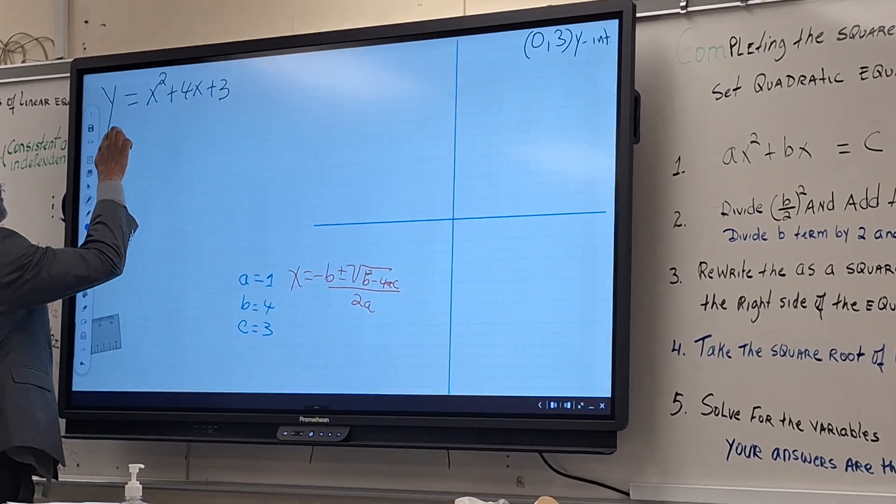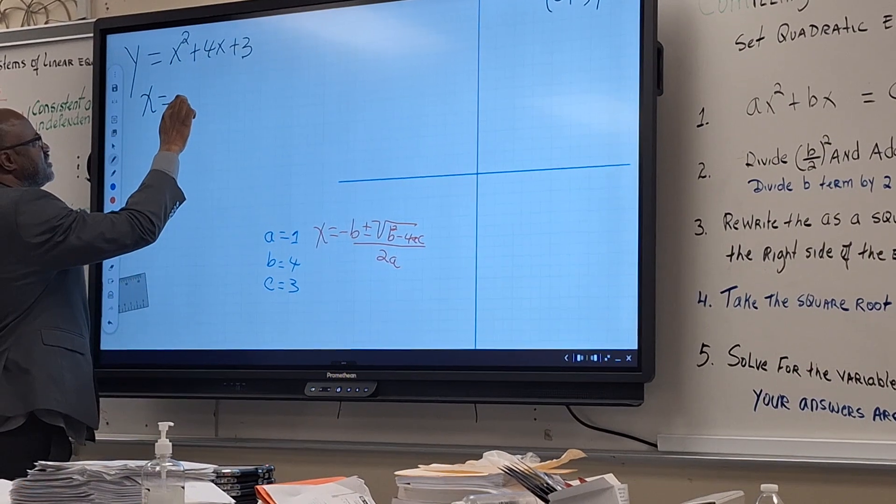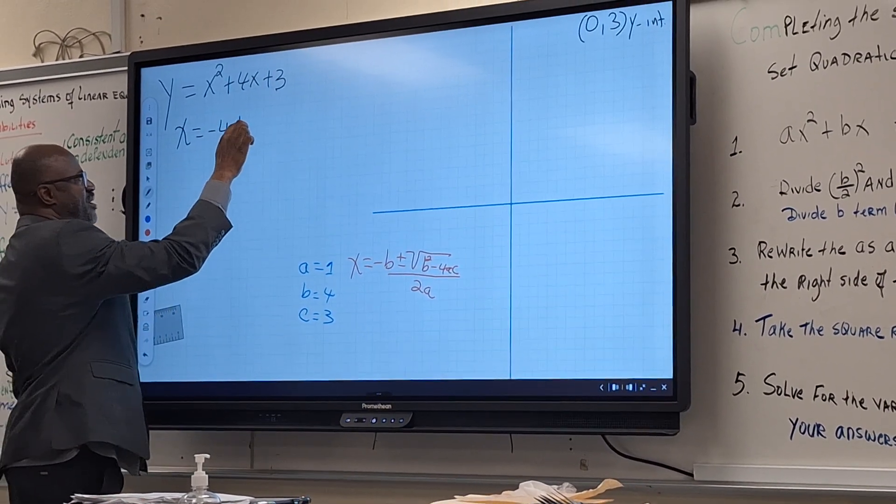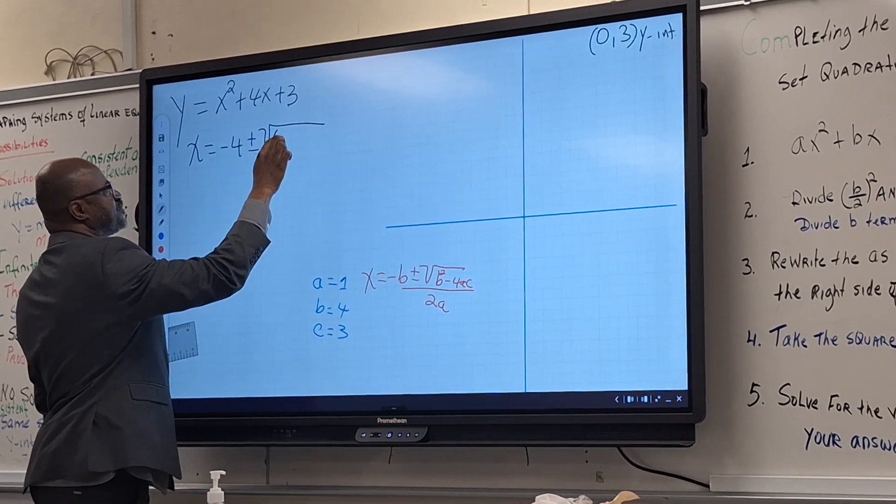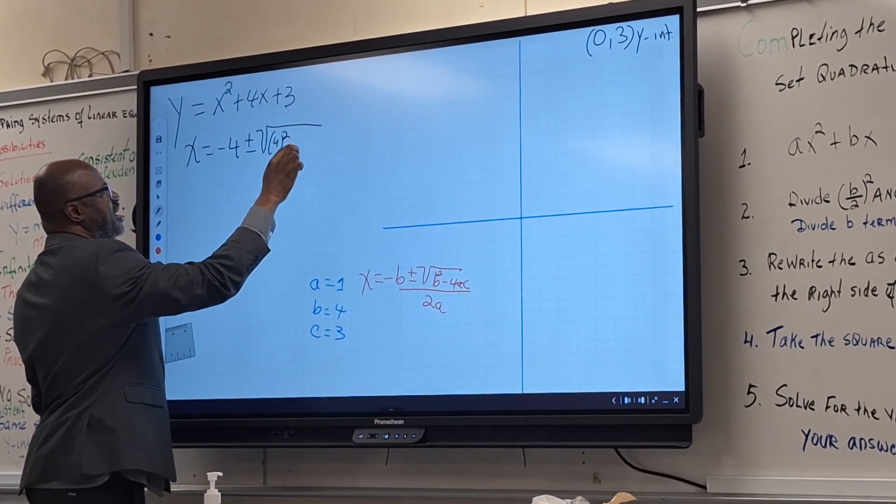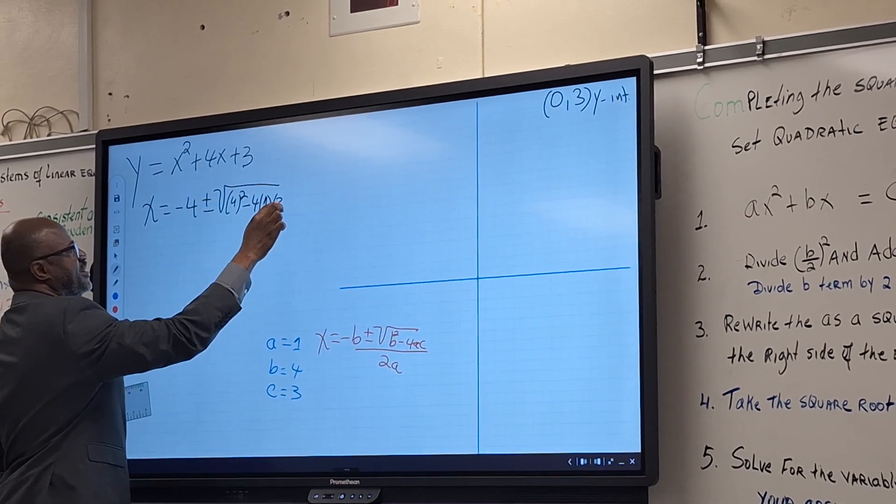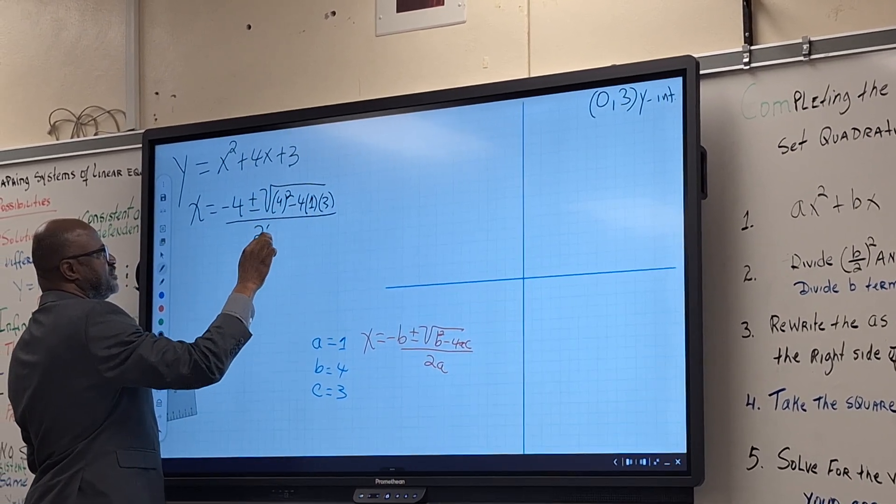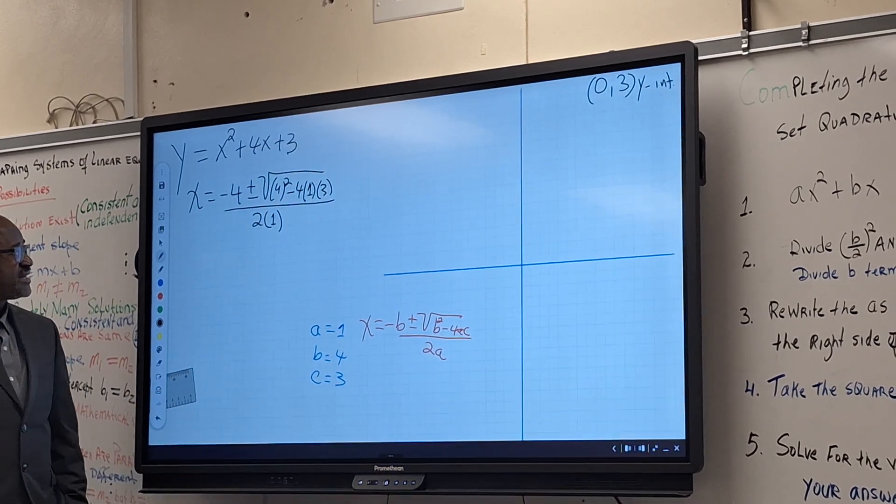In this case, we will have x equal minus negative four plus or minus square root of four squared minus four times one times three over two times one. So we have to work this out to find our x-intercept.